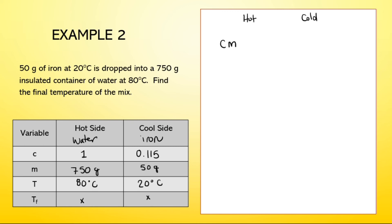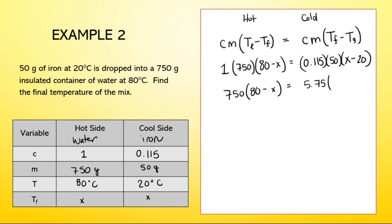Let's set it up again. The hot side is C, M, the initial temperature minus the final temperature. And the cold side is C, M, the final temperature minus the initial temperature. So the water, C times 750 times 80 minus X equals C for iron times the mass of the iron times the final temperature, which we don't know, minus the initial temperature of the iron. We're going to clean up in front first, multiplying 750 by 1, and on the other side, we just have 5.75 onto X minus 20.